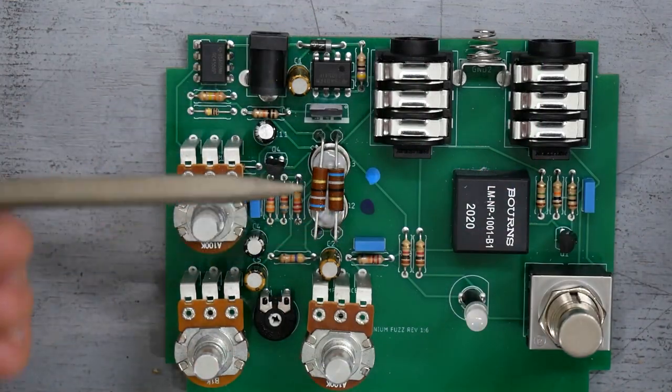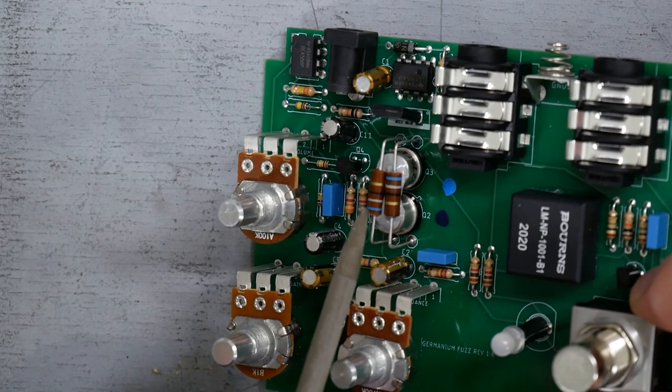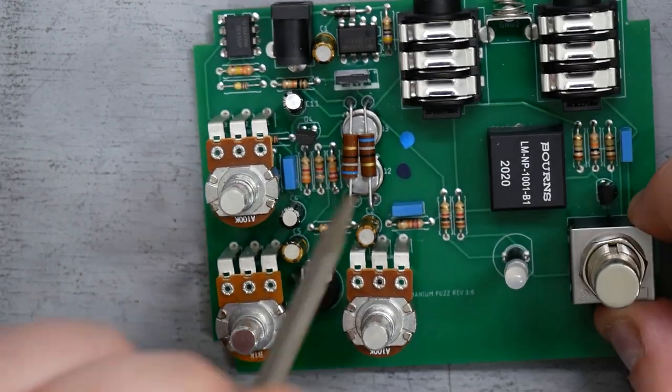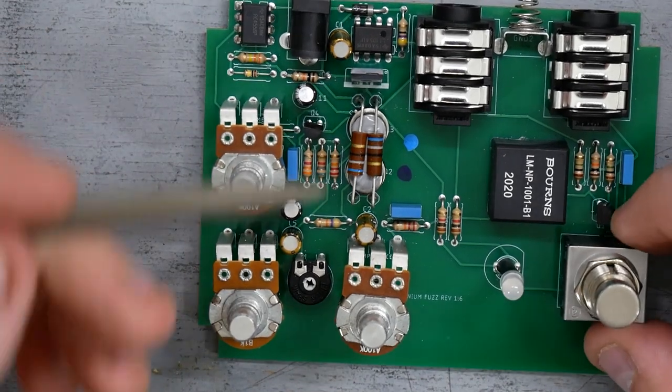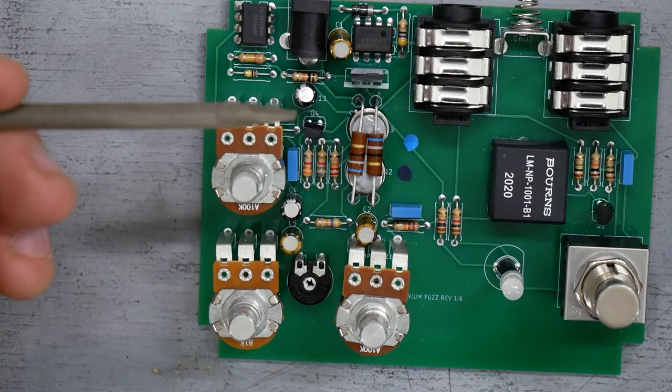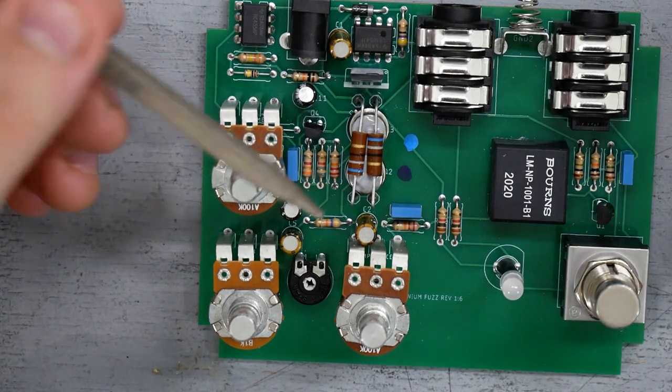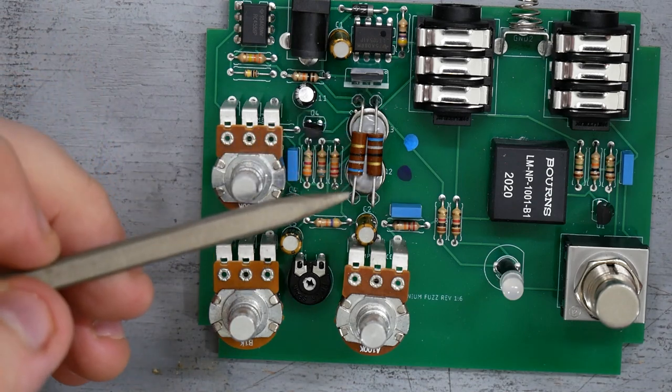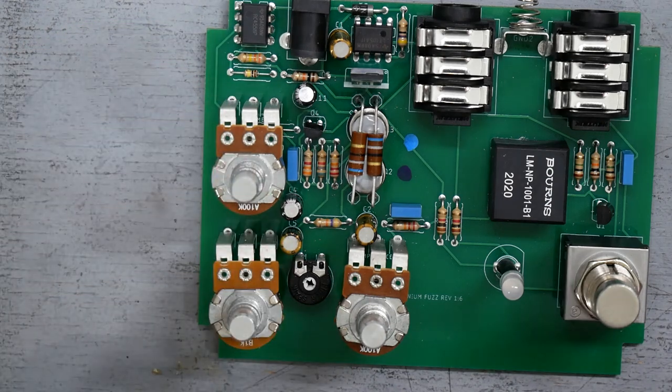So let's talk about how the temperature regulation circuit works here. So we already looked and saw we have two carbon comp resistors sitting on top of the germanium transistors with thermal paste. So the idea here, the concept is that we want to raise, artificially raise the temperature of the germanium transistors in order to get the bias conditions where we want them to make the fuzz face sound right.